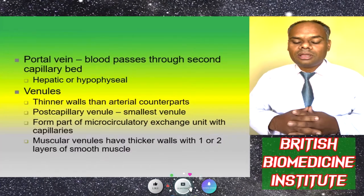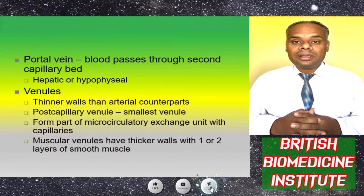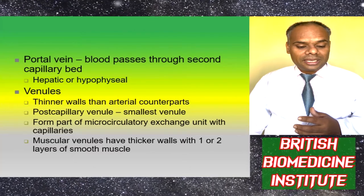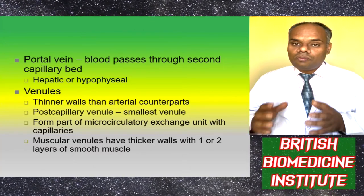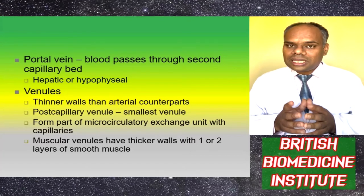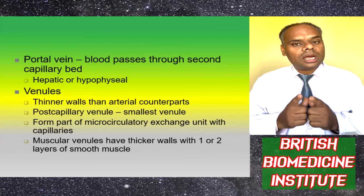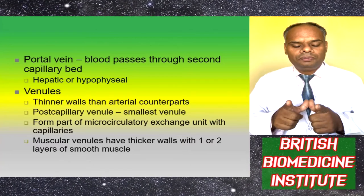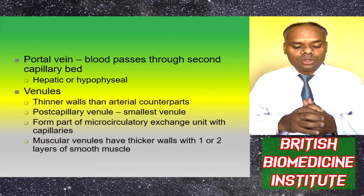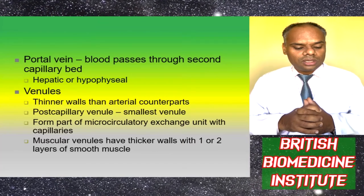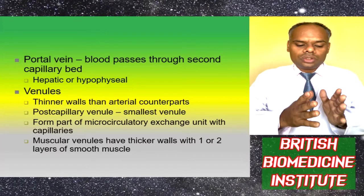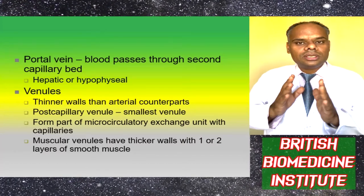Portal veins are where blood passes through a second capillary bed, such as hepatic and hypophyseal portal systems. Venules have thinner walls than their arterial counterparts. Post-capillary venules are the smallest venules and form part of the microcirculation exchange unit with capillaries. Muscular venules have a thicker wall with one to two layers of smooth muscle.